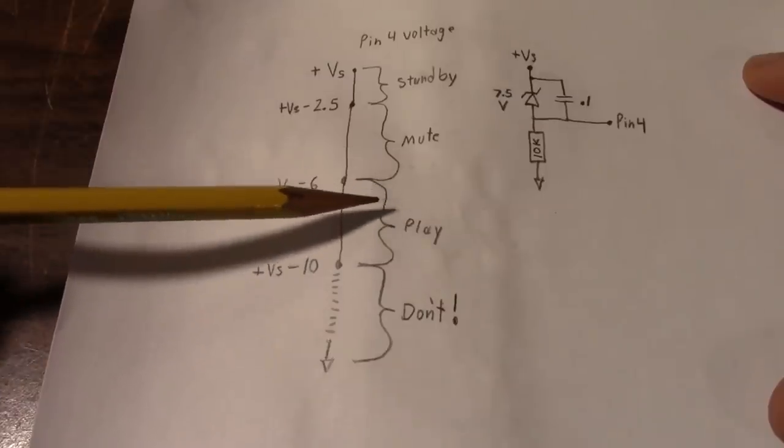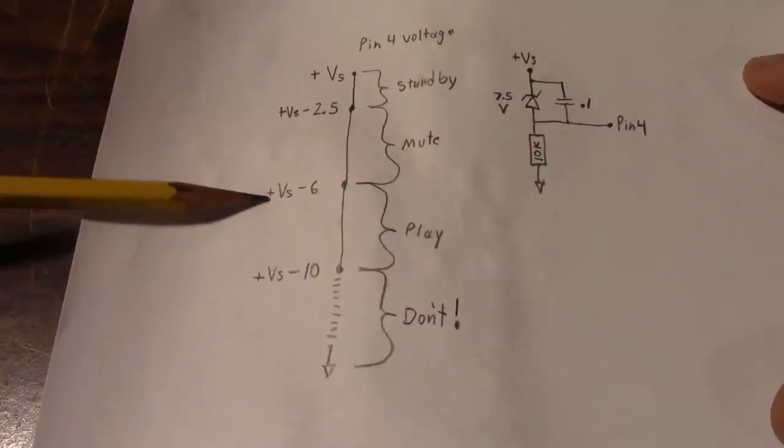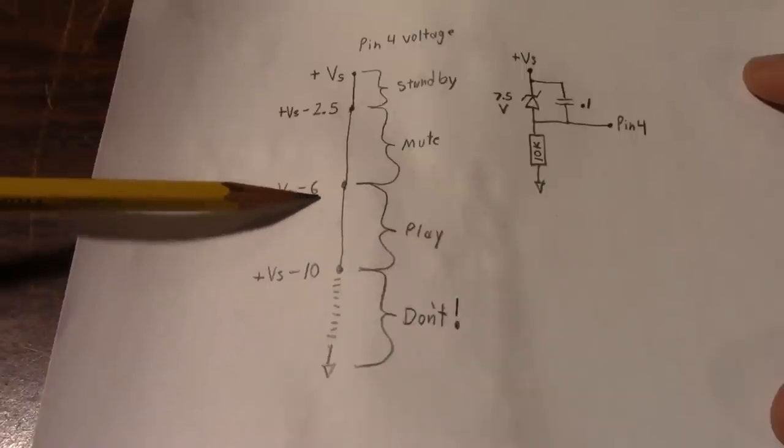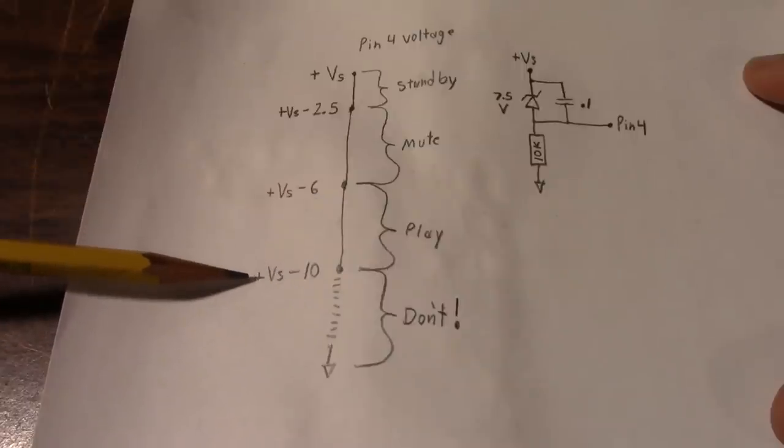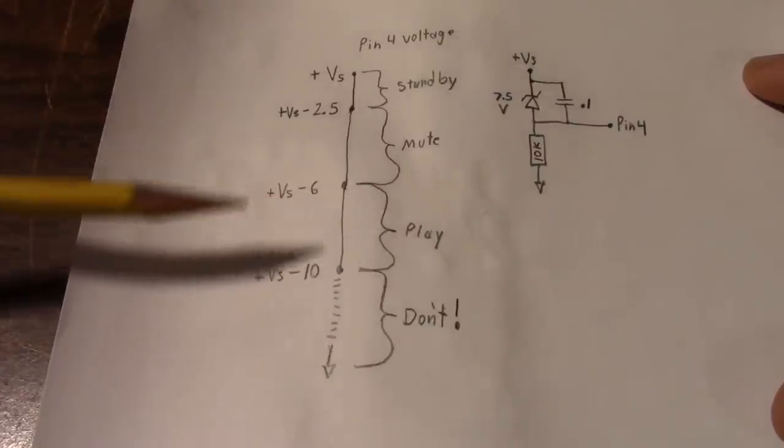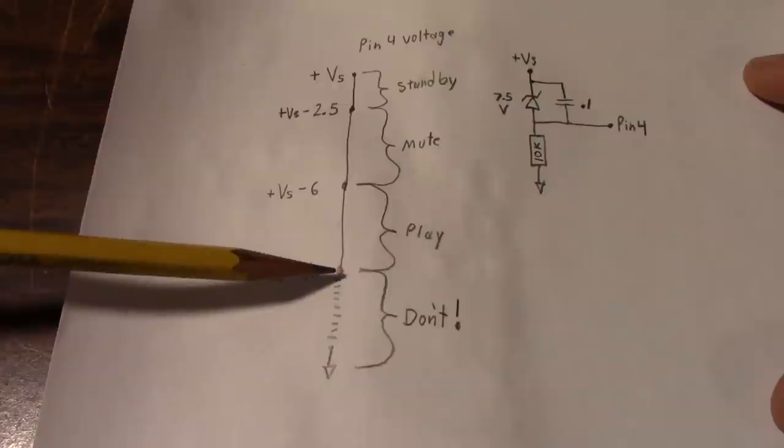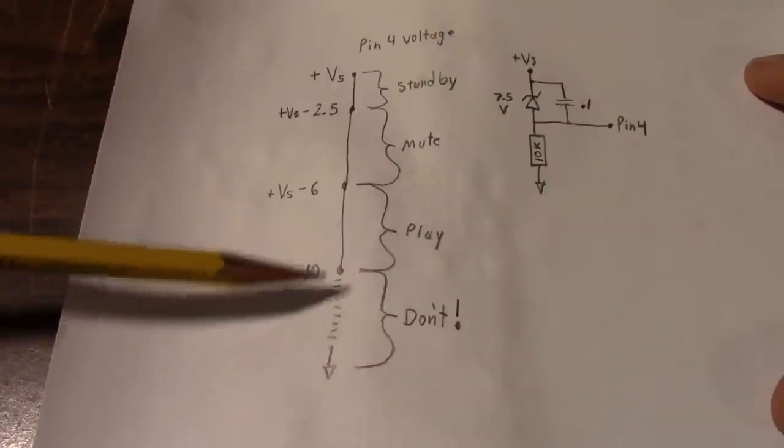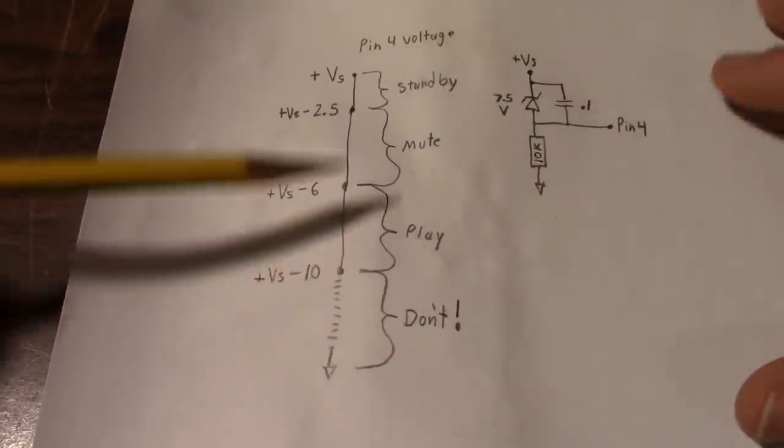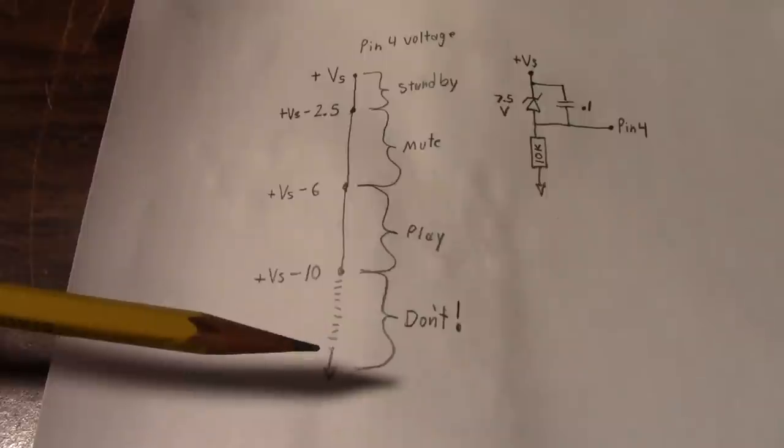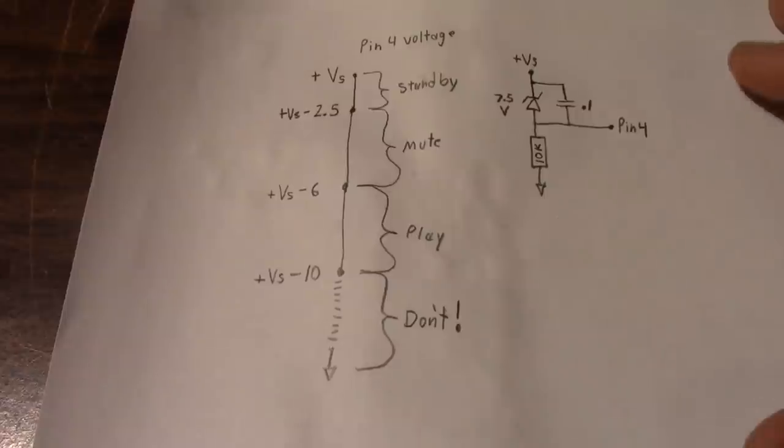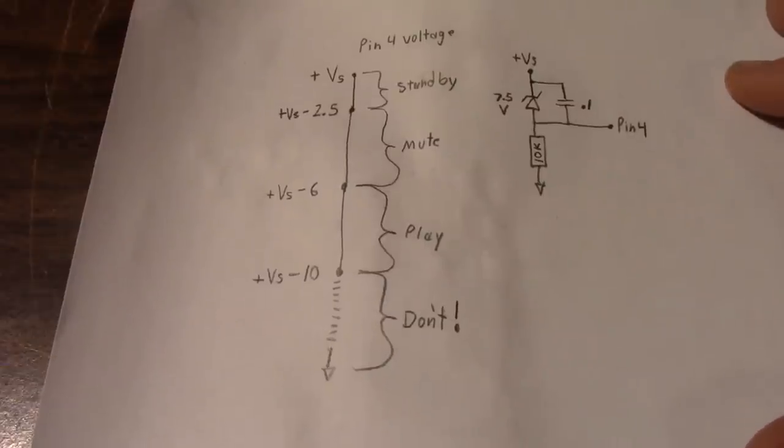To put it into mute mode, you have to have the pin between the supply voltage minus 2.5 and the supply voltage minus 6 volts. So mute mode just means it doesn't put out any sound, but the internal bias currents are operating inside the chip. To put the amplifier into play mode, you have to put the mute pin at supply voltage minus 6 volts to supply voltage minus 10 volts. And you'll get output from the amplifier. And you don't want to run it at any voltage less, because it could put the amplifier in an odd state.